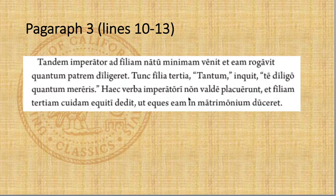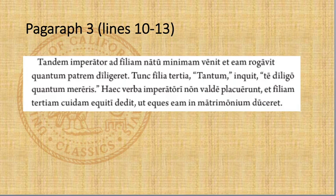Going down to the next clause: cuidam is the dative of quidam, quidam, quoddam — remember that's qui/qui/quod plus dam. This is the dative of qui, qui, quod, forming the dative 'cuidam.' It goes with equiti, which is also dative, meaning 'to or for a certain knight.' Remember, quidam is used to introduce characters or things into a story that have not been mentioned before, and that's exactly what it's doing here.